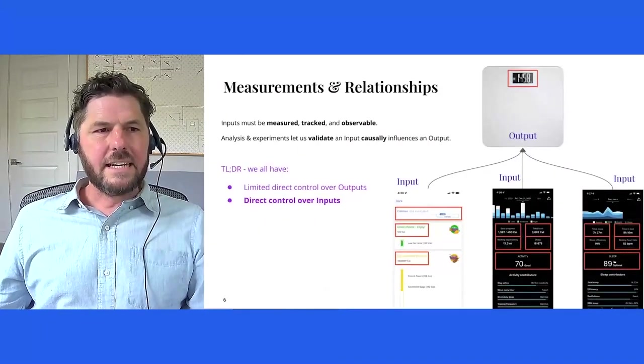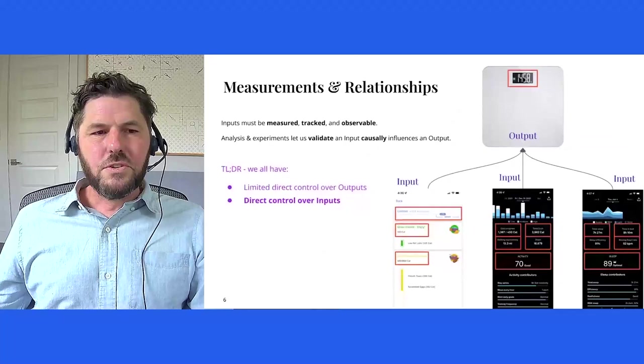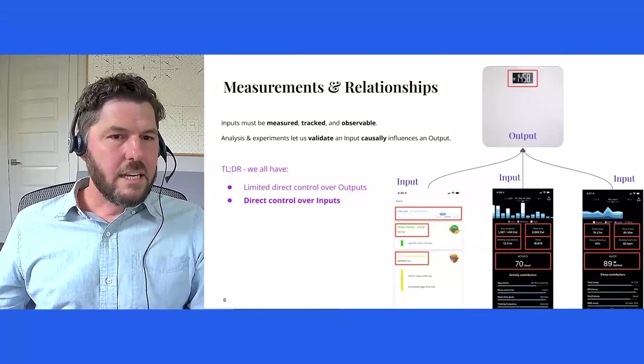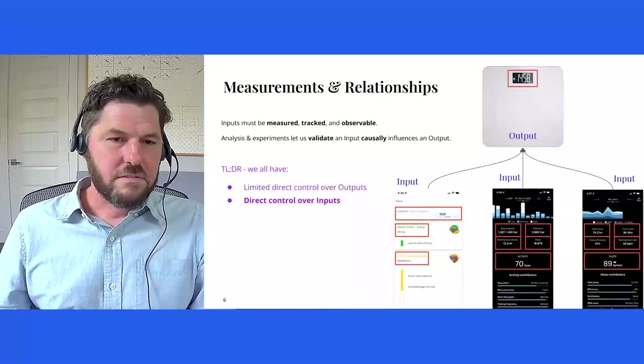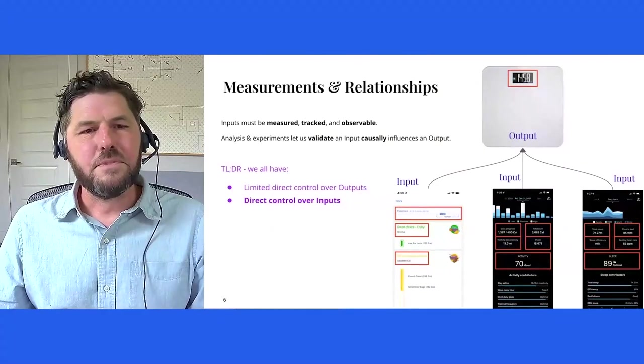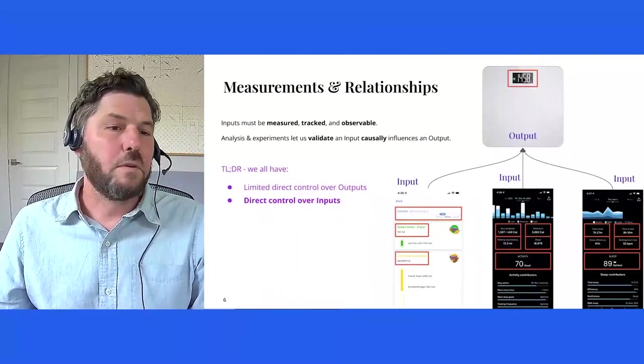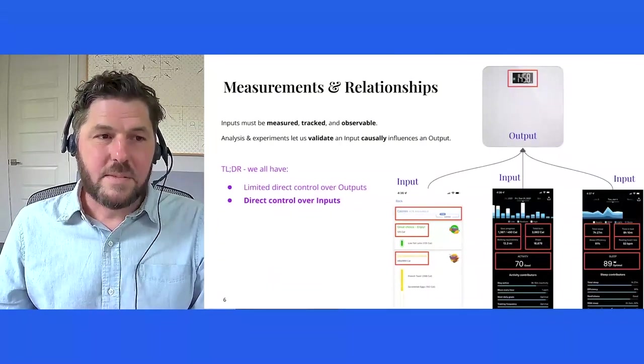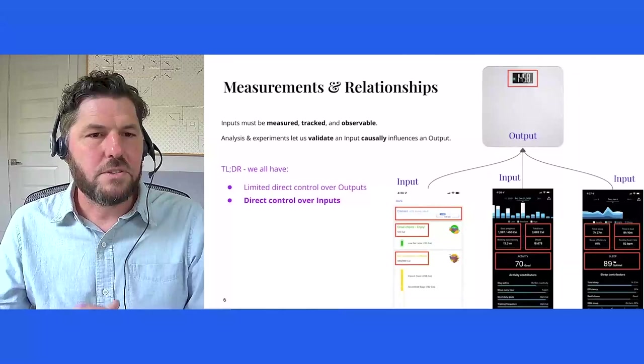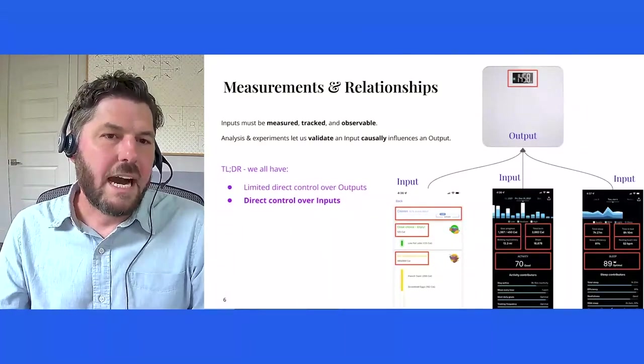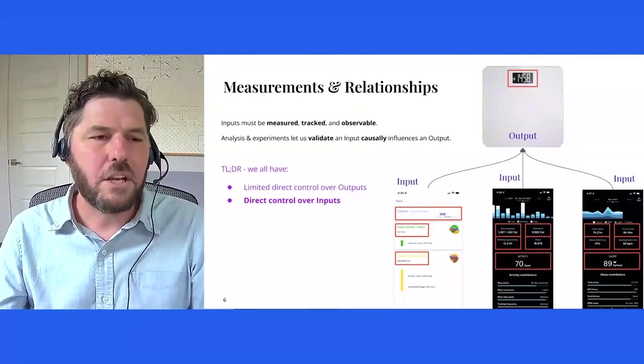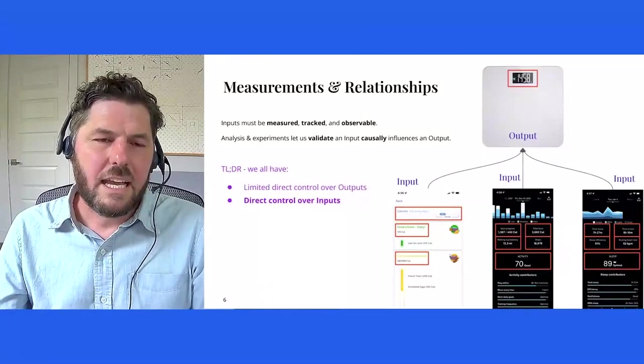So if we think about how these things connect up, the inputs that we choose to work on, that we directly control, that we can focus our work on, these need to be measurable. They need to be tracked and they need to be observable. And in my case, I use a handful of apps on my phone to do so. By doing this, we can start to connect these up to outputs that we want to influence that we do not directly control. And through analysis and experiments, we can validate that an input does in fact causally influence an output. So in summary, in my personal life, I have limited direct control over the output, the number that I see on the scale every morning when I check in on the output that ultimately I need to be managing. But I do have direct control over inputs. And as I work on those inputs, I can influence the output.